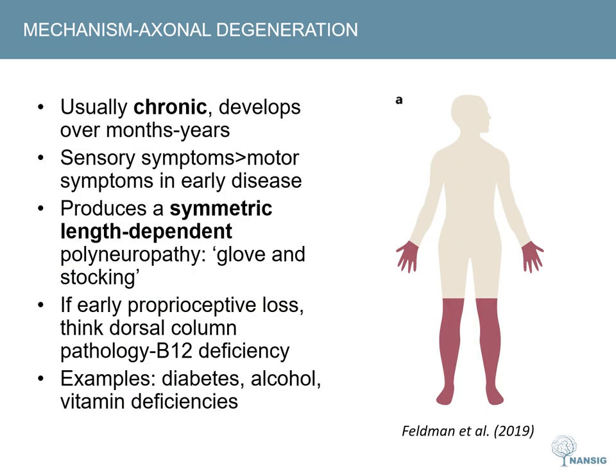Another way to think about polyneuropathies is the underlying process of nerve damage — whether it is primarily due to axonal degeneration or demyelination. Axonal degeneration is more common and gives rise to chronic polyneuropathies such as diabetic polyneuropathy. These usually develop over months to years, with sensory symptoms predominating in the early stages. They produce a symmetric, length-dependent polyneuropathy, meaning they affect both sides of the body, with the longest nerves affected first.